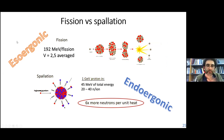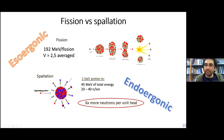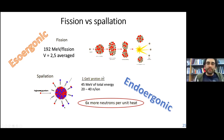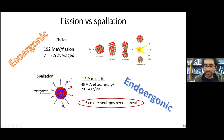This is a comparison between fission and spallation. Fission is an exergonic process; spallation is an endergonic process. From fission, we have 192 mega-electron-volts per reaction and an average of 2.5 neutrons. From spallation, we have 45 mega-electron-volts of total energy and 20 to 30 neutrons per ion, and we can get 6 times more neutrons per reaction compared to fission.